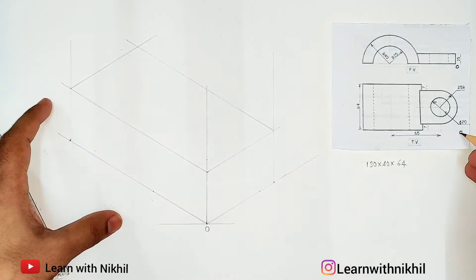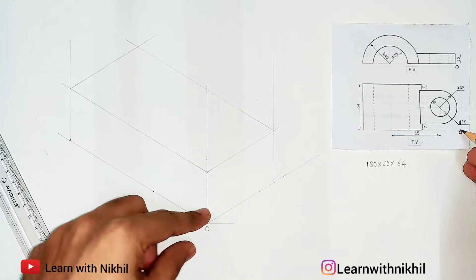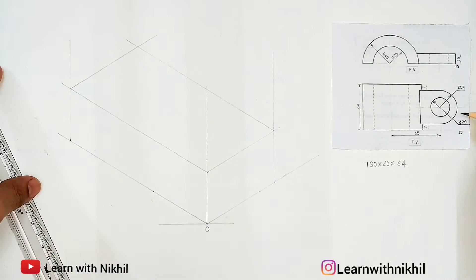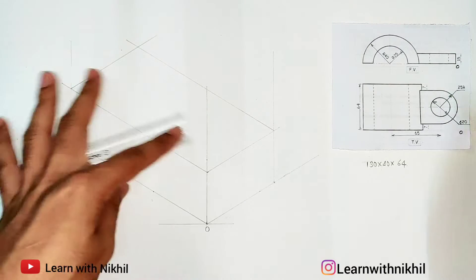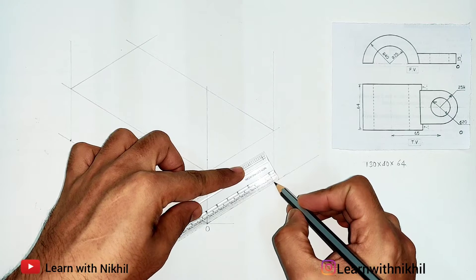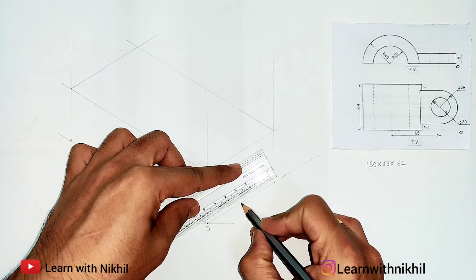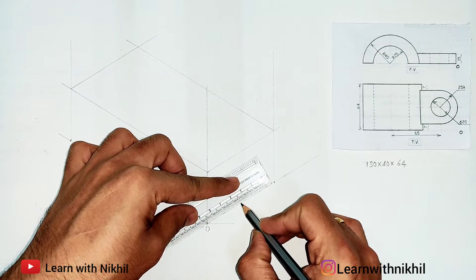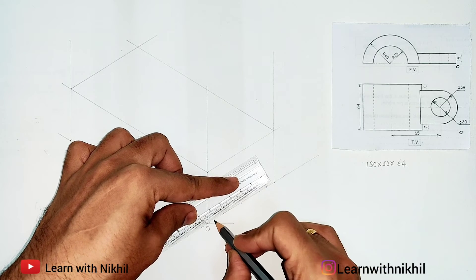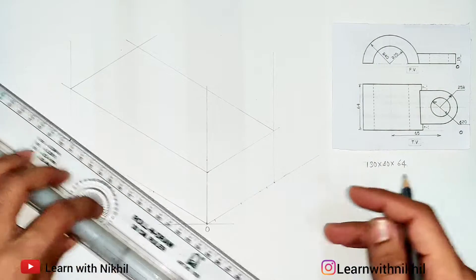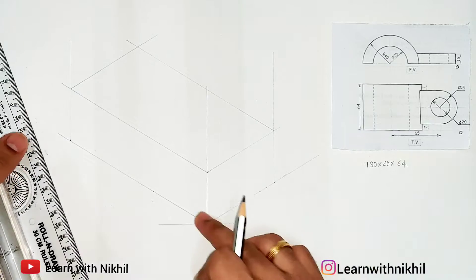Now starting with the sum. As you can see, first we have a semicircle and it is at the center of this rectangular block, so first we will mark the center point. This distance is 64 so the center point will be at 32. As the radius of the semicircle is 25, we have to create a square of side 50. So 25 millimeters on both sides — total distance is 50.